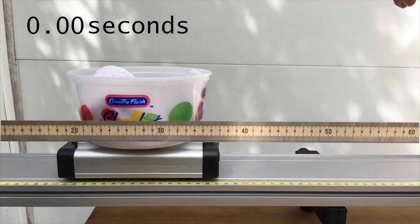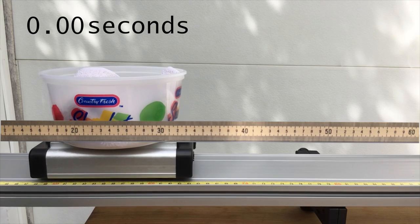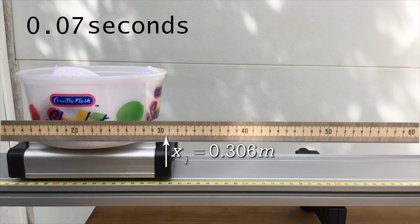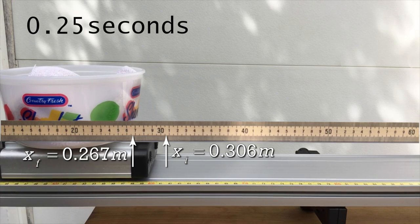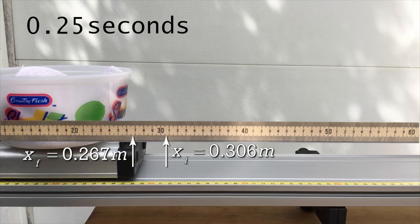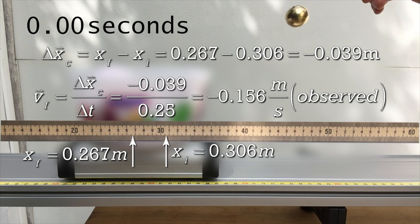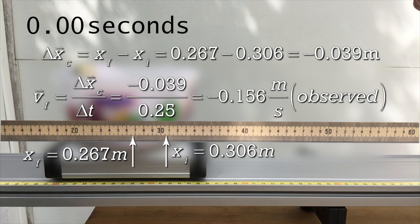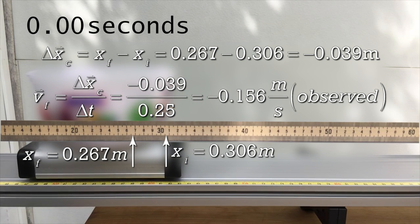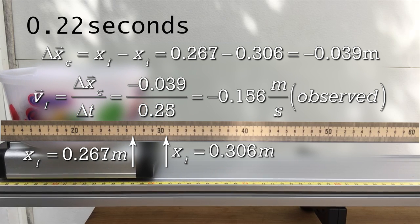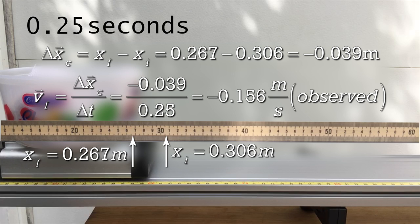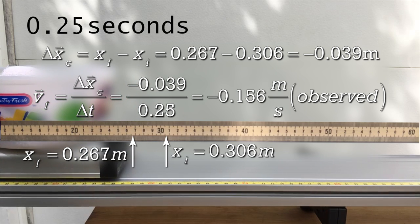And we can again overlay the meter stick and show the cart goes from 0.306 meters to 0.267 meters in 0.25 seconds, which gives us an observed final velocity for the cart of negative 0.156 meters per second, which we can use to determine an error between our predicted value and our observed value.